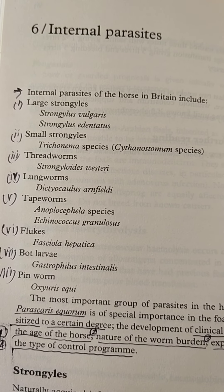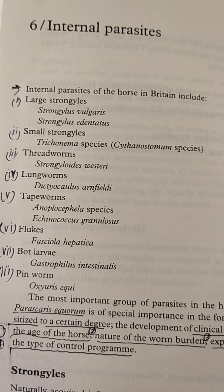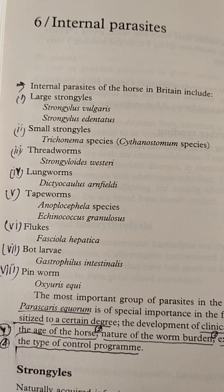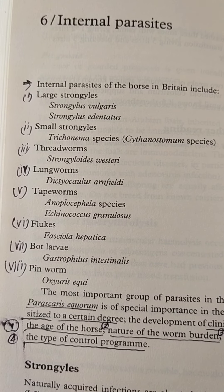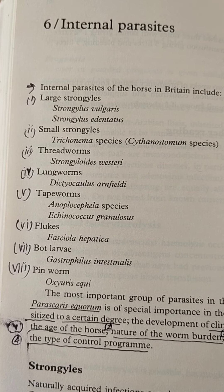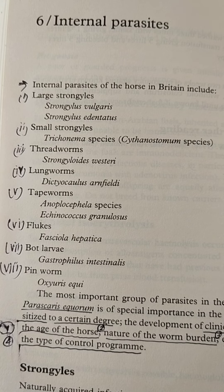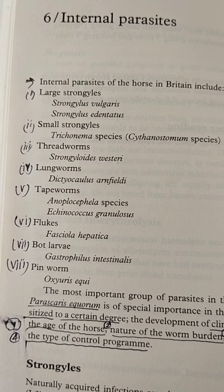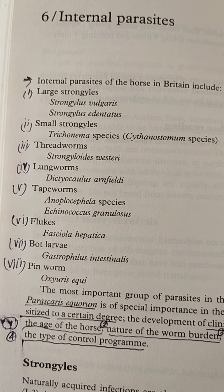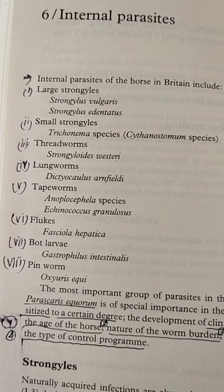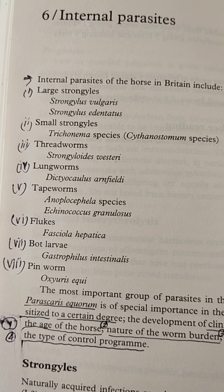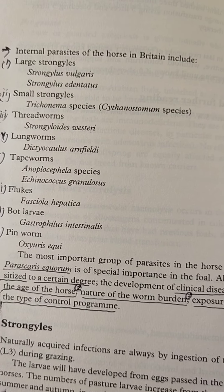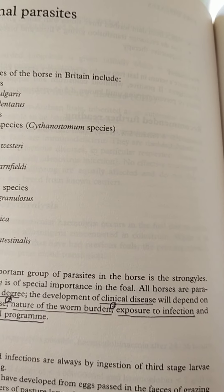Internal parasites of the horse in Britain and other parts of the world include large strongiles, which include Strongylus vulgaris and Strongylus edentatus; small strongiles, including Trichonema species; threadworms, including Strongyloides; lungworms, including Dictyocaulus arnfieldi; tapeworms, including Anoplocephala species and Echinococcus granulosus; flukes, including Fasciola hepatica; bot larvae, including Gasterophilus intestinalis; and pinworms, including Oxyuris equi. The most important group of parasites in the horse is the strongiles.